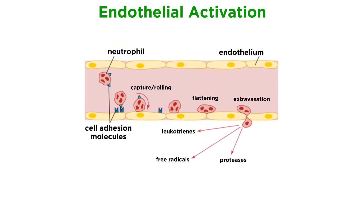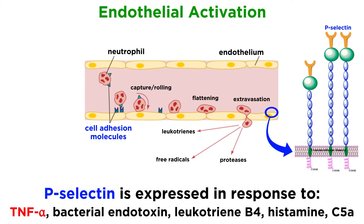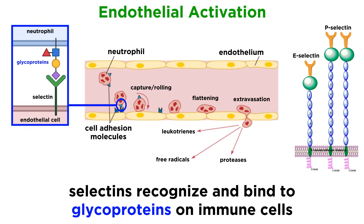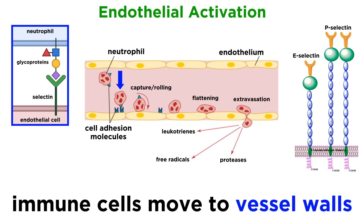Endothelial cells express a protein on their surface called P-selectin in response to the cytokine TNF-alpha, bacterial endotoxin, leukotriene B4, histamine, or complement protein C5A. They also express a protein called E-selectin. These selectins recognize and bind to glycoproteins on the surface of immune cells. As blood flow through a vessel slows due to vasodilation, immune cells, especially neutrophils and monocytes, are able to move to the walls of the blood vessels where they can begin to interact with the selectins.